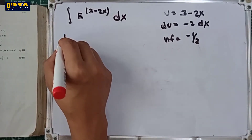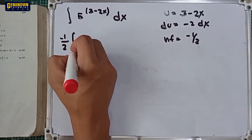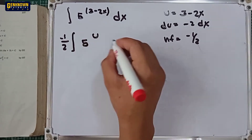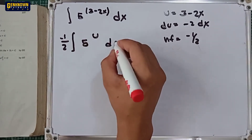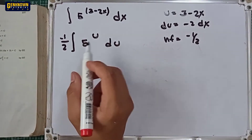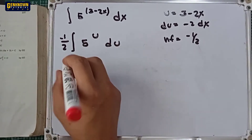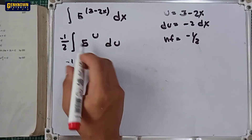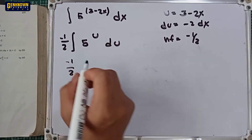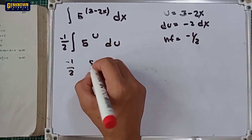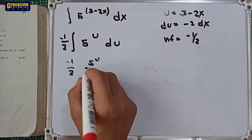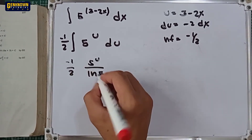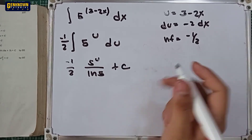Substituting, we have negative 1 over 2 times the integral of 5 raised to u du. Applying formula number 2, negative 1 over 2 multiplied by the integral of 5 raised to u du is equal to 5 raised to u all over ln5 plus the constant.